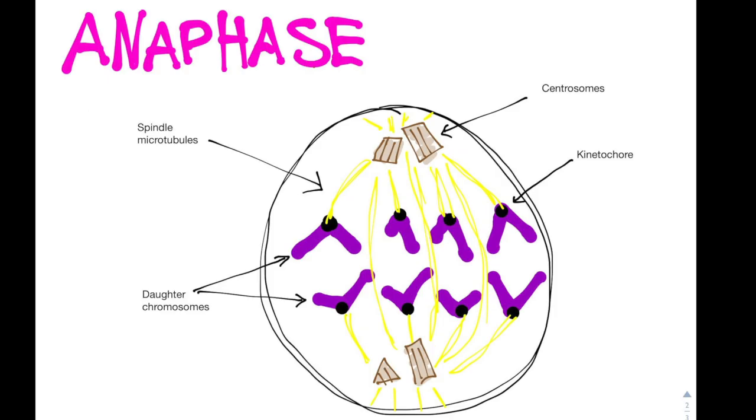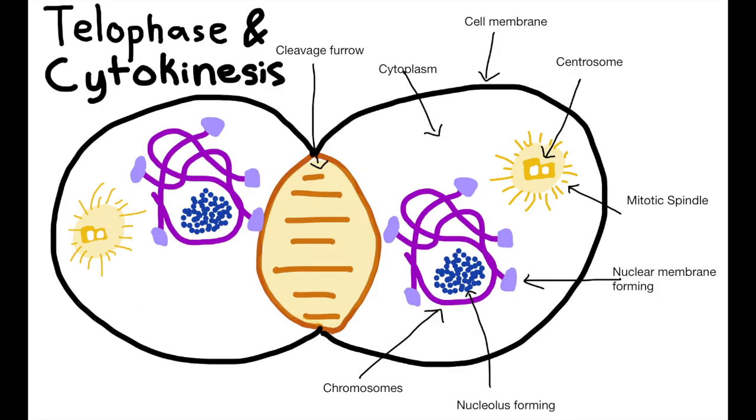Directly after anaphase comes telophase, which is the reverse of prophase. It begins when the two groups of chromosomes reach the poles and the cell elongates and nuclear envelopes begin to form at the two poles of the cell. The chromatin decoils and nucleoli reappear.